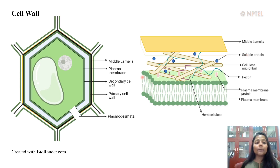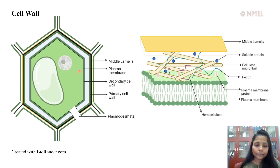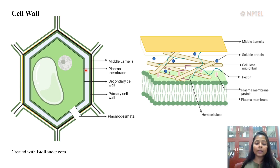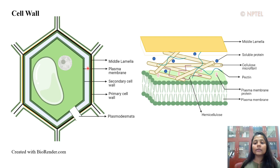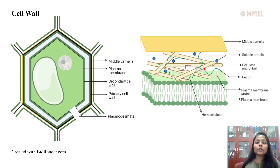Next comes the secondary cell wall, which is often deposited between the primary cell wall and the plasma membrane. The secondary cell wall is present in cells which have stopped their growth. It is also composed of cellulose microfibrils which are arranged in a more ordered manner, and they contain lignin which replaces the pectin in the secondary cell wall.